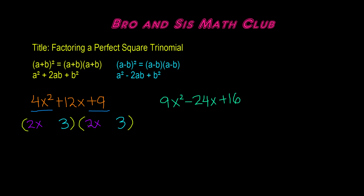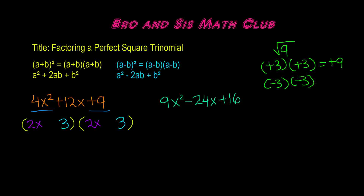Now the final thing remaining is the signs. How do we know whether it's going to be 2x plus 3 or 2x minus 3? When you find the square root of a positive number — we had positive 9 — it could be positive or negative, because positive 3 times positive 3 gives us positive 9, but negative 3 times negative 3 also gives us positive 9. So we determine the sign by looking at the middle term, which is positive 12x. Since it's positive, we're going to use positive 3.